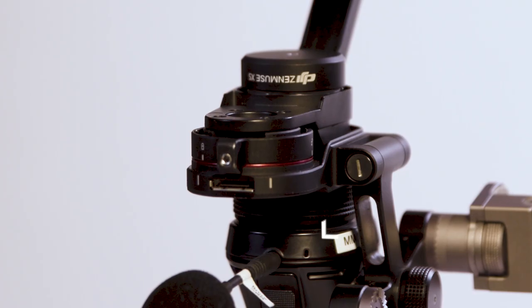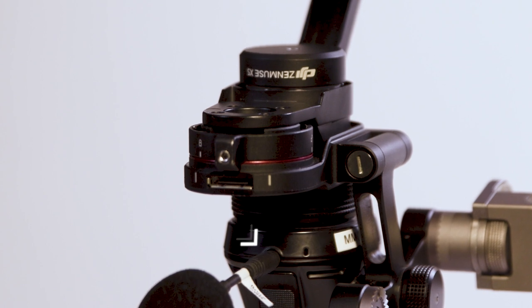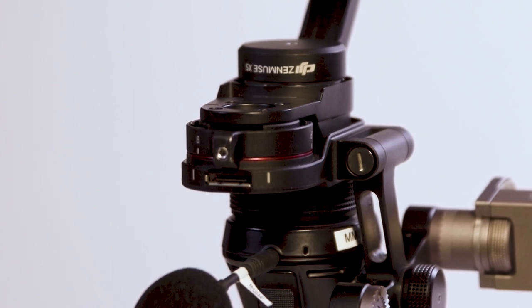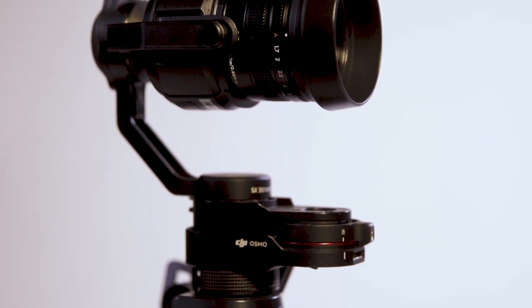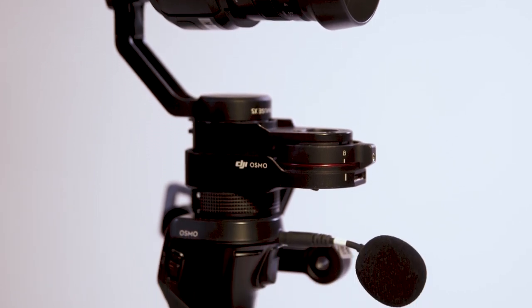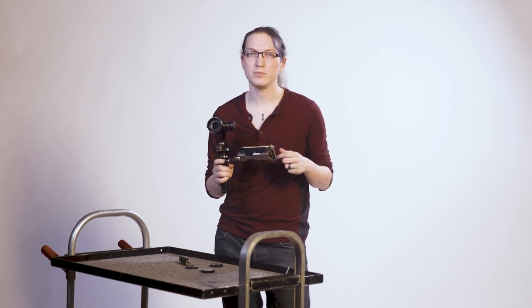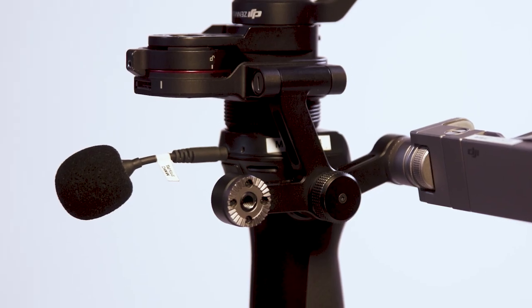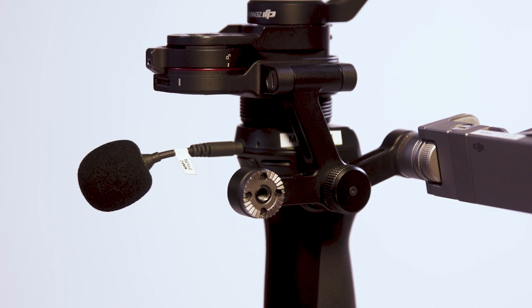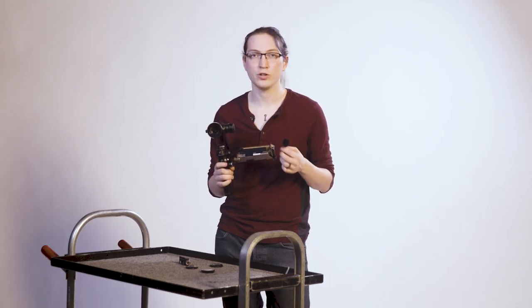The Osmo Pro features a built-in mic, as well as a 3.5mm line-in for use with external mics. That line-in can be found above the trigger on the Osmo handle. The internal mic can be used for reference audio, but I've found it to be lacking in quality, so I recommend using the small mushroom mic that we include in the kit. It will give you clearer audio for reference without adding much weight to the rig.